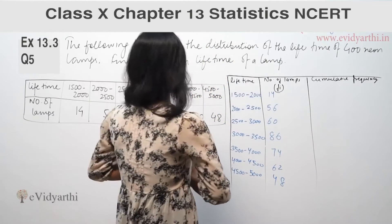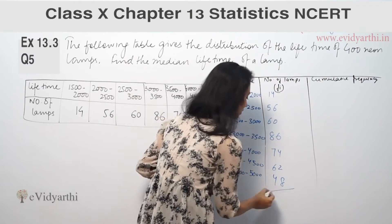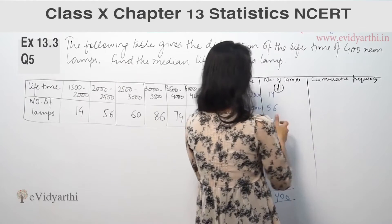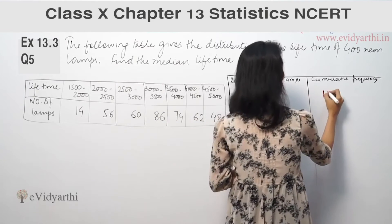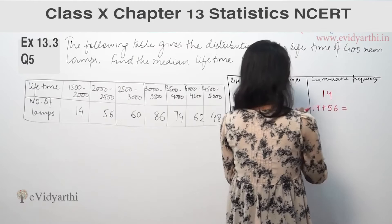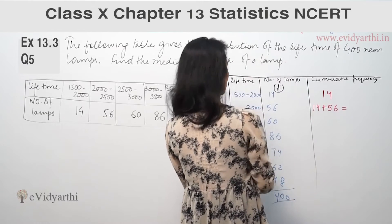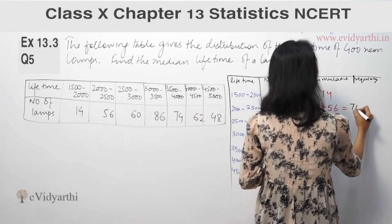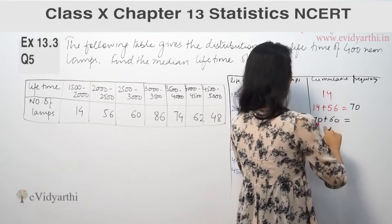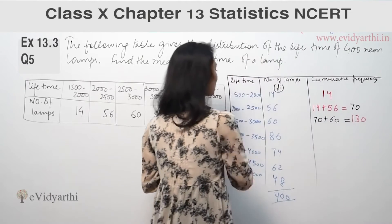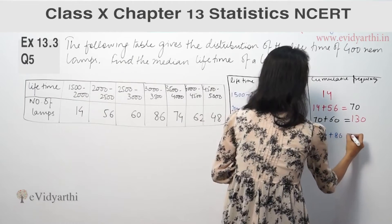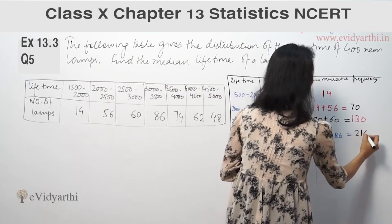Now we calculate cumulative frequency. We have 400 total lamps. The first cumulative frequency is 14. Then 14 plus 56 gives 70. Then 70 plus 60 gives 130. Then 130 plus 86 gives 216.